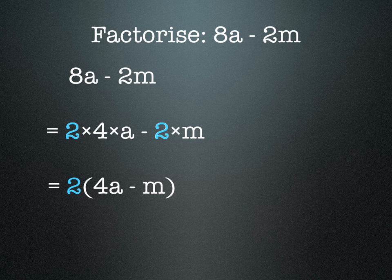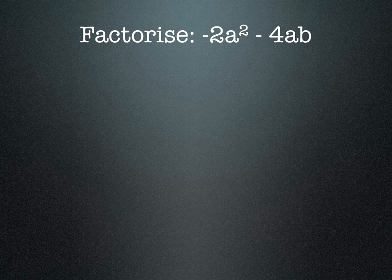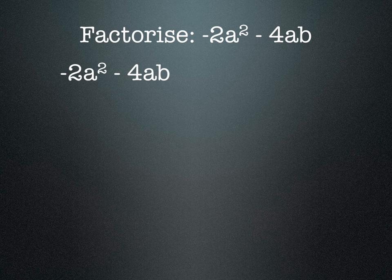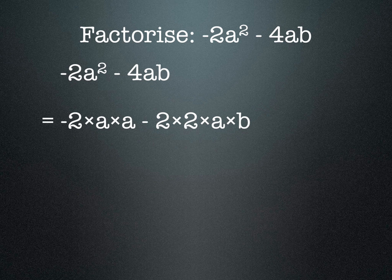Here we're asked to factorize -2a² - 4ab. So -2a² is really -2 × a × a, and -4ab is -2 × 2 × a × b.